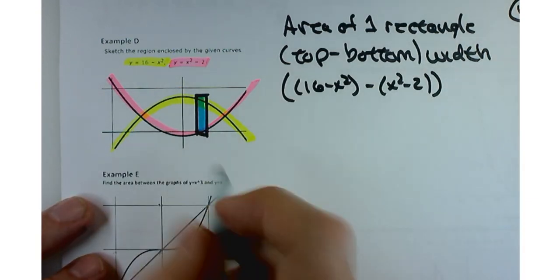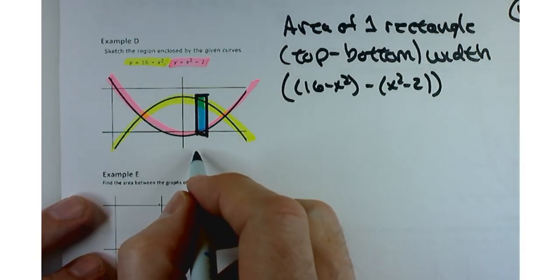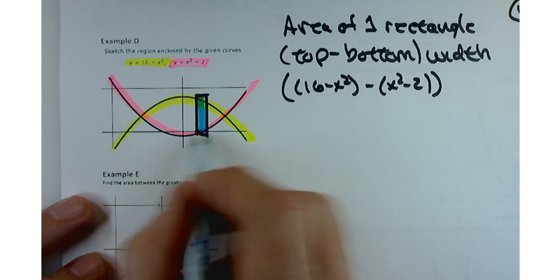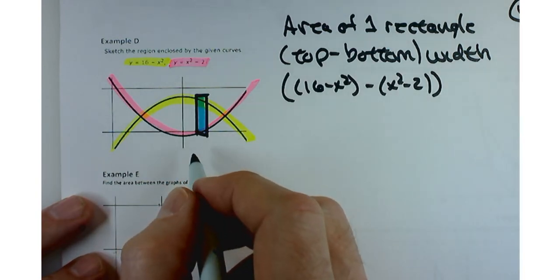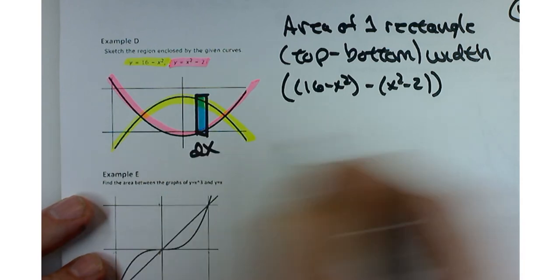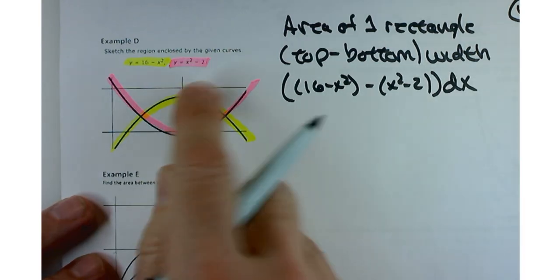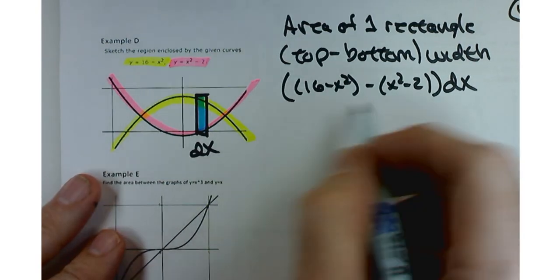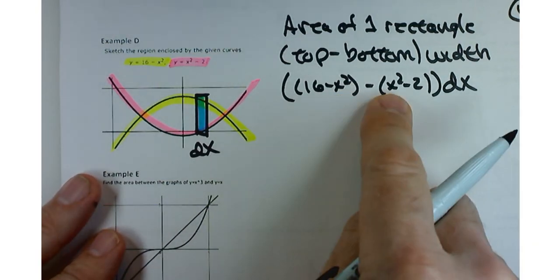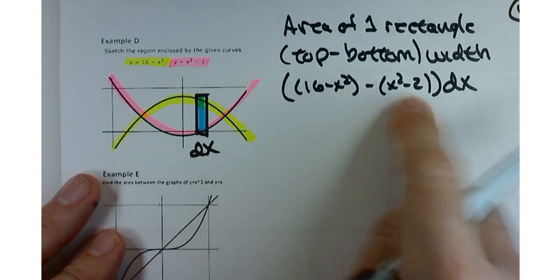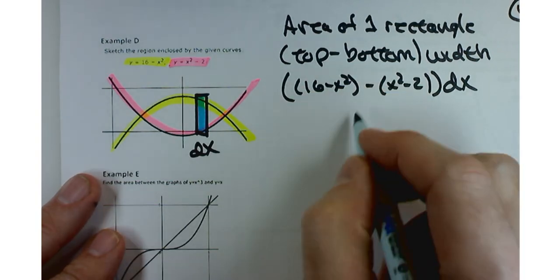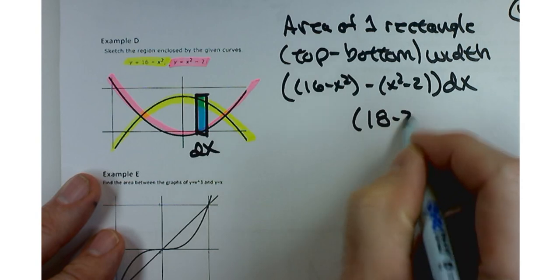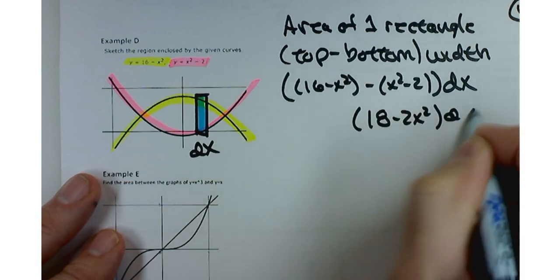What's the width of this? How wide is that rectangle? dx. It's delta x, but for this application we're going to use the dx. If I combine like terms, I'll have a minus 2x squared and a plus 2 here, so I'll end up with 18 minus 2x squared dx.